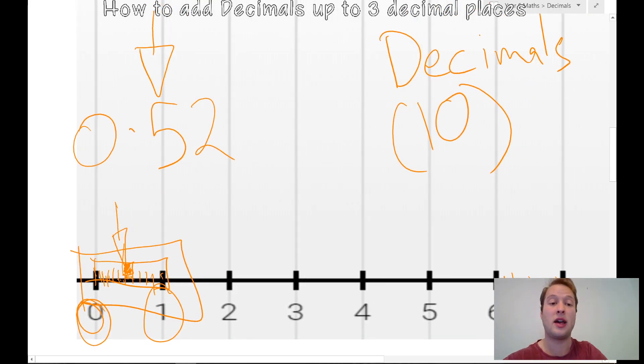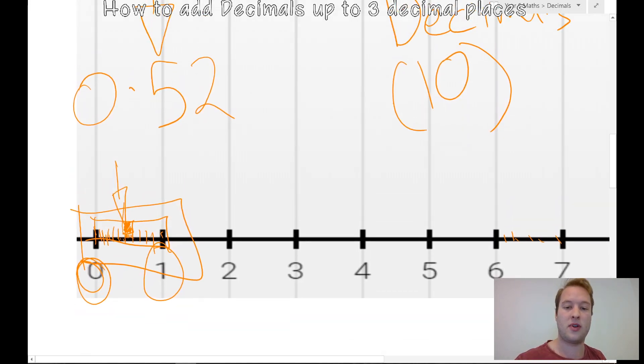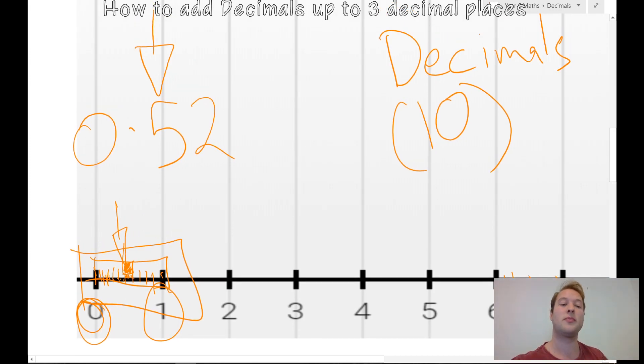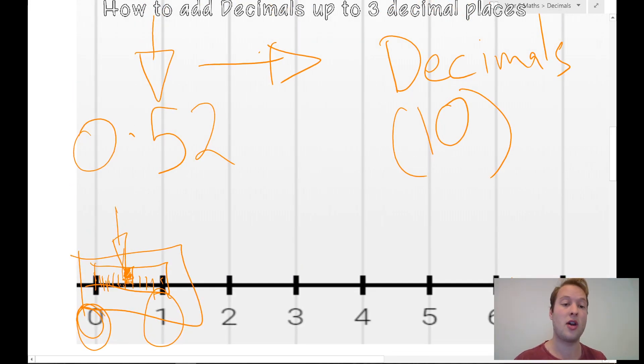It's important that we don't call it 0.52, because it's not 52. The idea is it's gone 5 tenths of the way past 0, and then gone 2 hundredths of the way past that as well. Each number you add is just you're breaking up into another 10. There's a number called a Google, and you could keep going all the way you wanted to go across the number line.